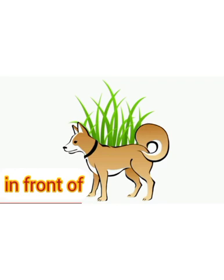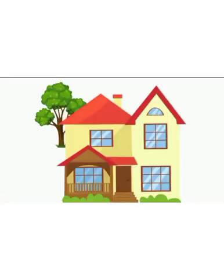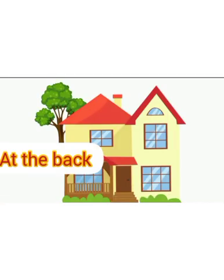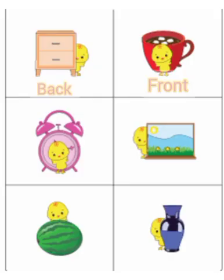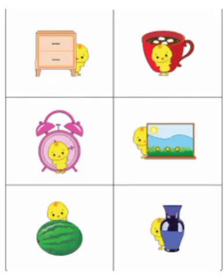The dog is in front of the grass. The tree is at the back of the house. Here are more pictures based on in front of and at the back.